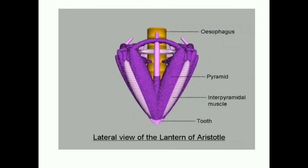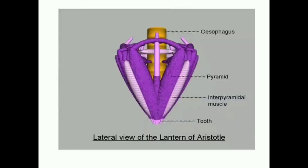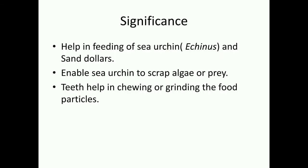Now, how does it work? It consists of two sets of muscles: protractor and retractor muscles, which help it to move. With the help of these muscles, the structure can be partially protruded and retracted through the mouth. It can move backward and forward as well as side by side, and these movements help it to tear off its prey or algae. Teeth help in chewing the food.